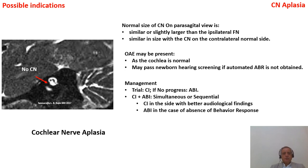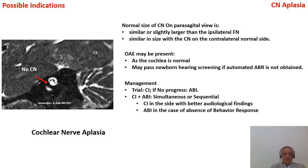Management of cochlear nerve aplasia: the most important criterion for CI is if any auditory behavioral response is found. If so, try CI; if no progress, go for ABI. Some surgeons do CI and ABI either simultaneously in the same operation or CI first and then ABI if there is no response. The CI will be done on the better ear in terms of nerve size and audiological timeline.